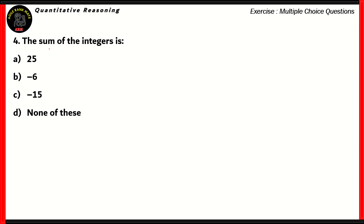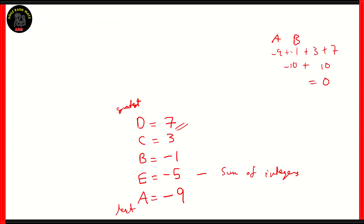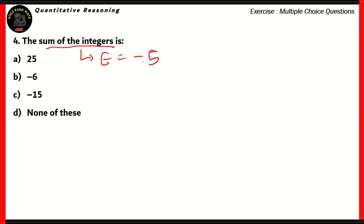Question number 4: the sum of the integers. The options are option A: 25, option B: minus 6, option C: minus 15, option D: none of these. According to statement number 5, the sum of the integers equals integer E, and the value of E is minus 5. Since none of options A, B, or C equal minus 5, the right answer is option D — none of these. Minus 5 is the actual value for the sum of the integers.